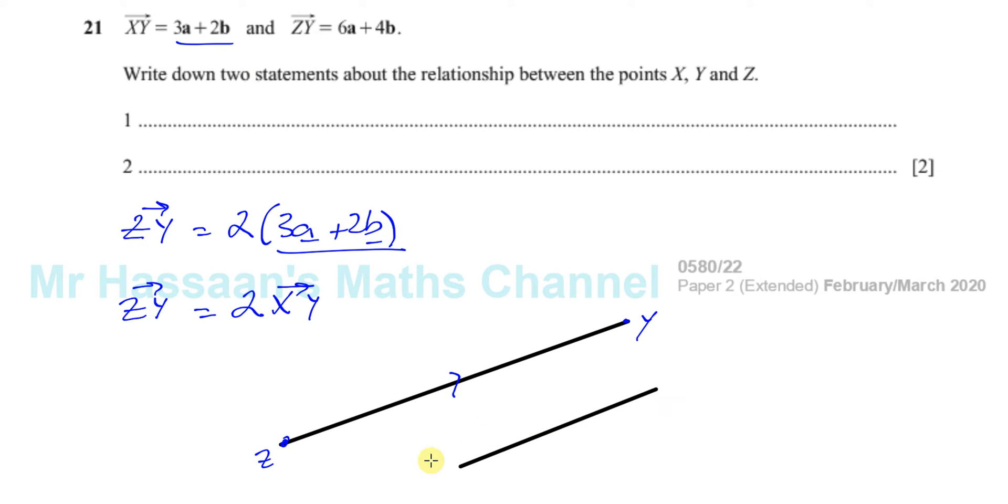When two vectors are parallel, you can express them in terms of the same vector. So Z to Y is equal to 2 times X to Y. That means Z to Y is in the same direction and it's twice as long as X to Y. Let's say it's half the length. X to Y is half the length of Z to Y. That means X must be halfway between Z and Y.